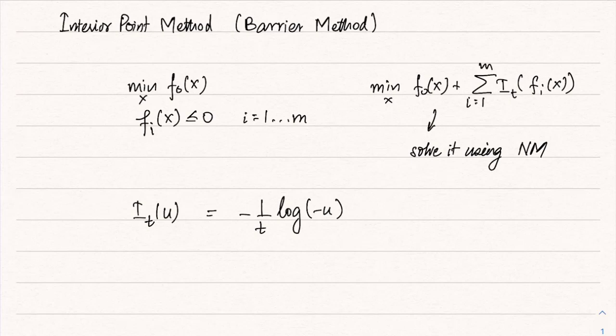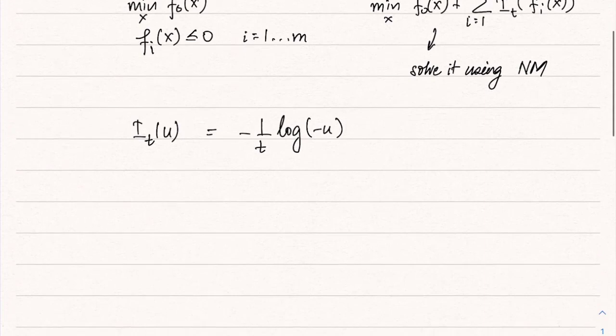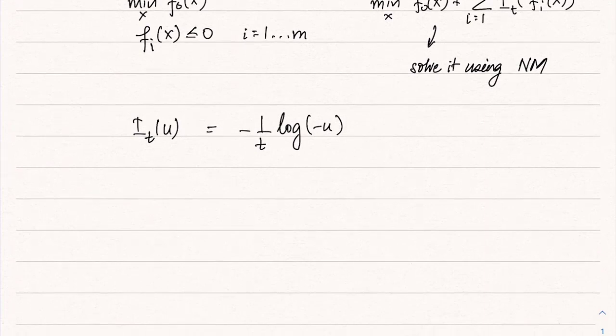u has to be negative, obviously, because fi of x are supposed to be negative, so u has to be negative here. This is the barrier function.